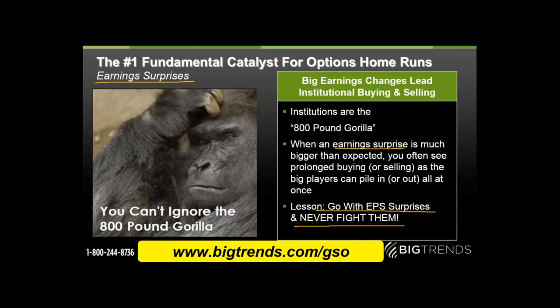Go with the earnings surprises quarter to quarter and never fight them. Track which way the stock gapped up or down. If a stock gaps up 5% after news and then ends up down, that's a big reversal. Get in tune with where the net direction is after earnings. The institutions — the 800-pound gorillas moving billions of dollars — are what you need to follow. You and I could be trading $10,000 or even $10 million and we'd still be tiny chimps compared to that gorilla. We don't want to get trampled — we want to follow them.